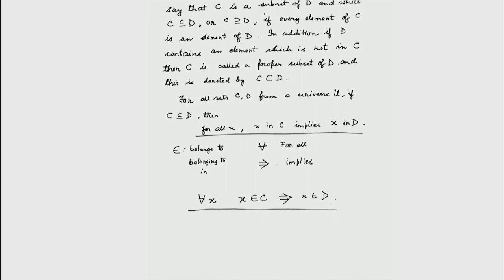Now, there is another symbol that is used frequently, which means 'there exists' (∃).